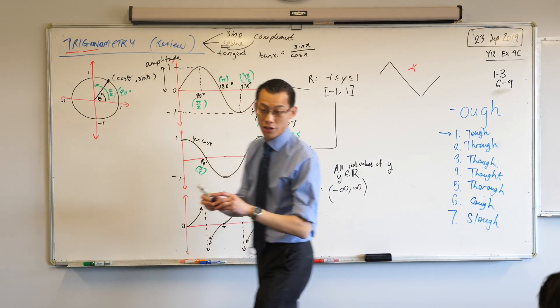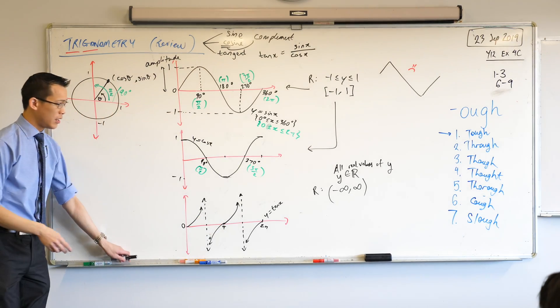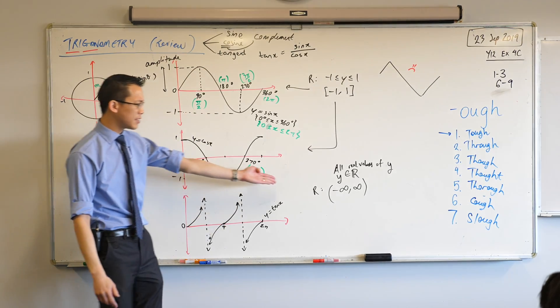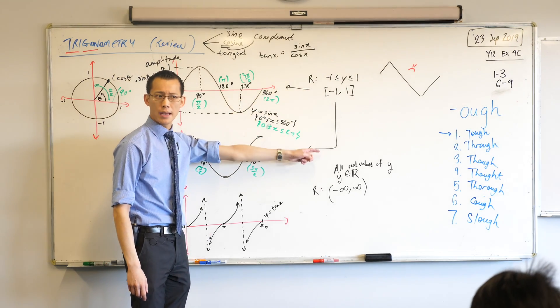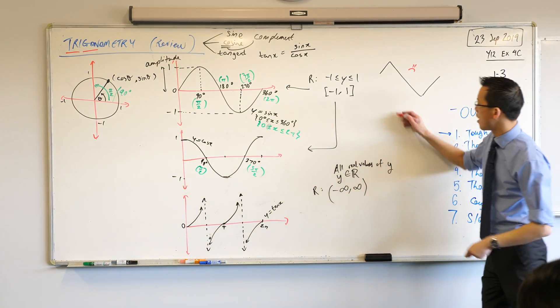Now, the reason I'm highlighting this is number one, you need to remember it. Number two, negative one and one are not as important to this graph as they are to these two. Now, I still think that's actually a really good idea and I want you to remember why.